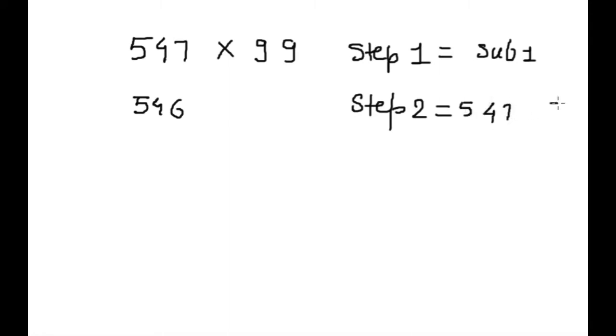547 into 99. Step 1. Subtract from 1. So if we will subtract this 547 from 1, so we will get 546. Now step 2. Divide 547 and 546 in 2 parts like this.